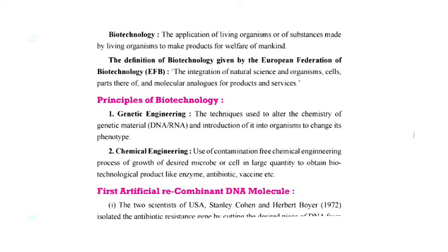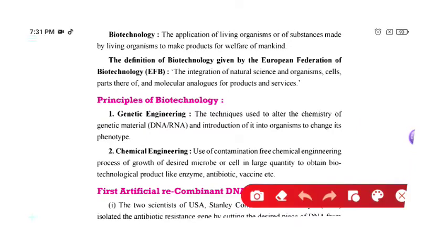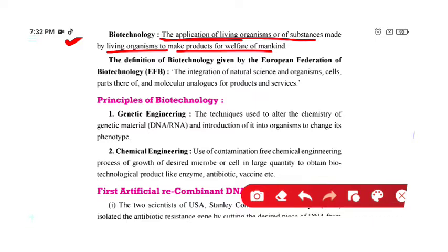The first terminology here is biotechnology. What do you actually understand by biotechnology? It is the application of living organisms, or substances made by living organisms, to produce products for the welfare of mankind. So biotechnology involves using living organisms or substances derived from them to create products beneficial to humanity.